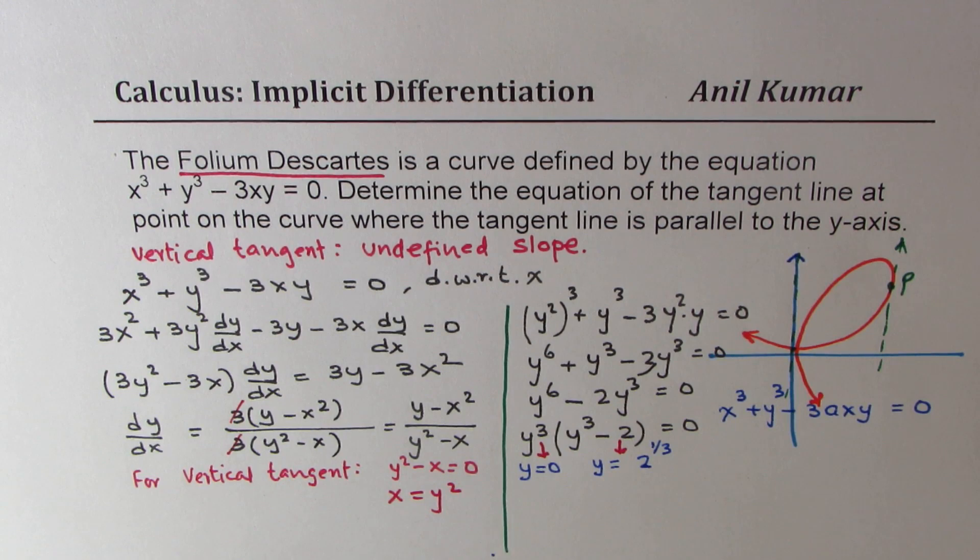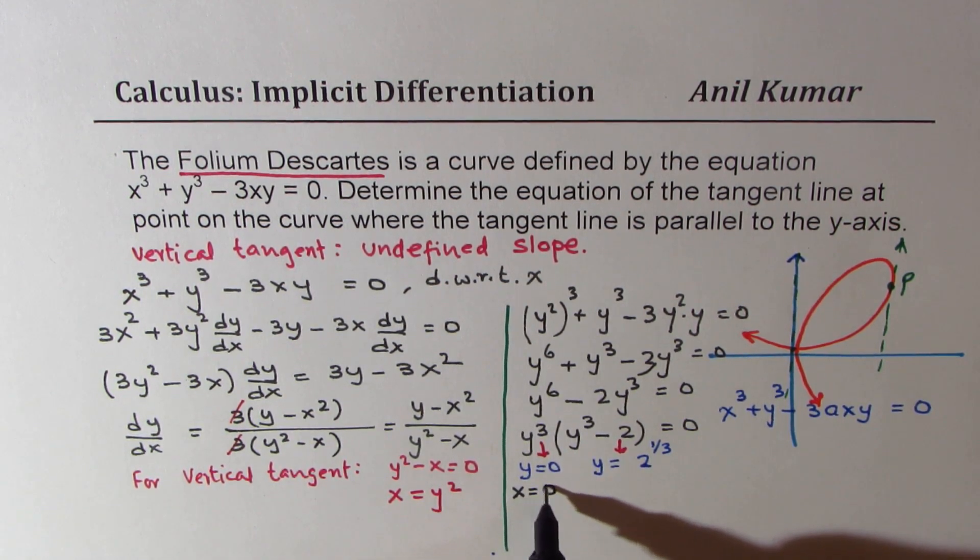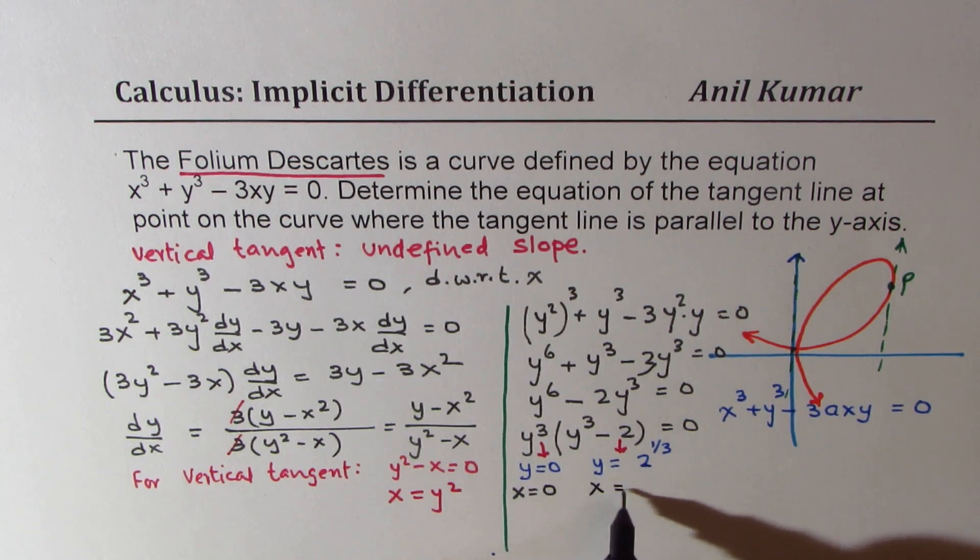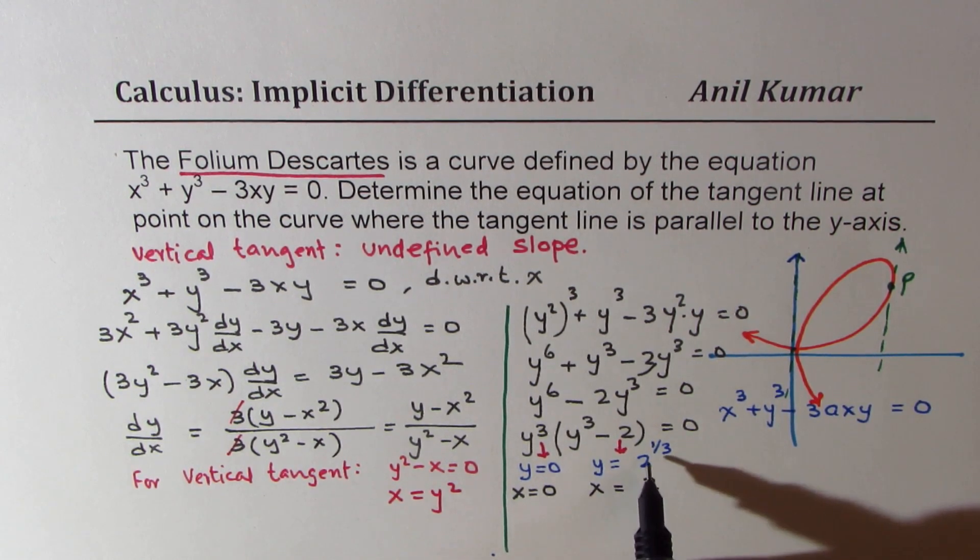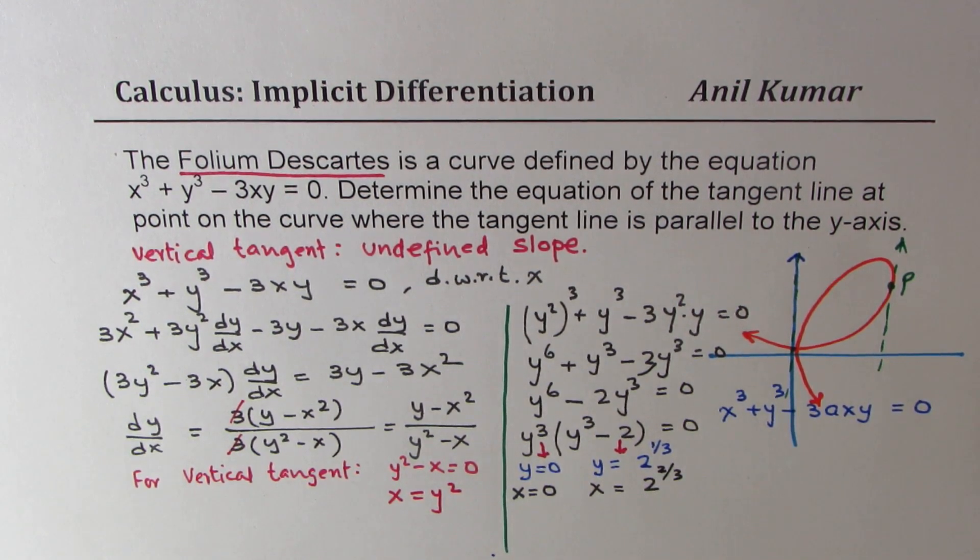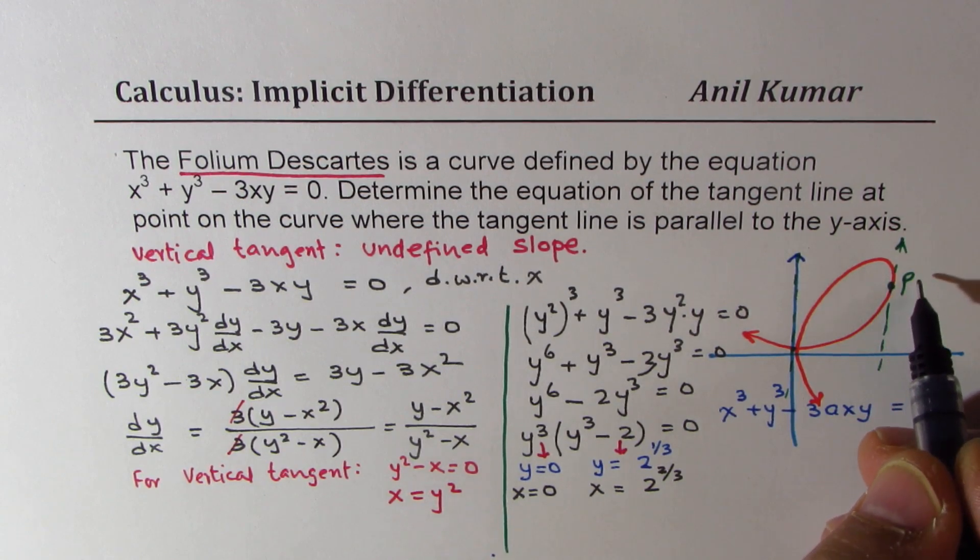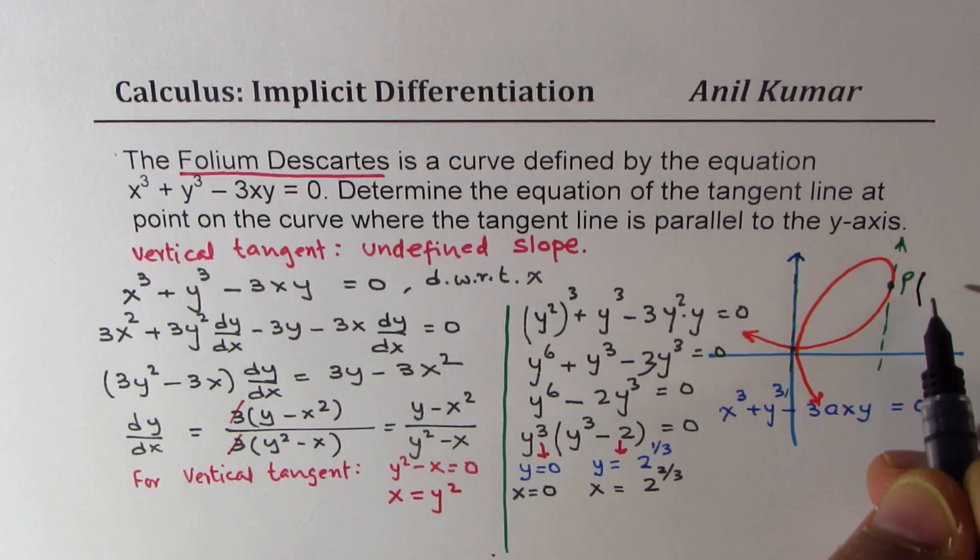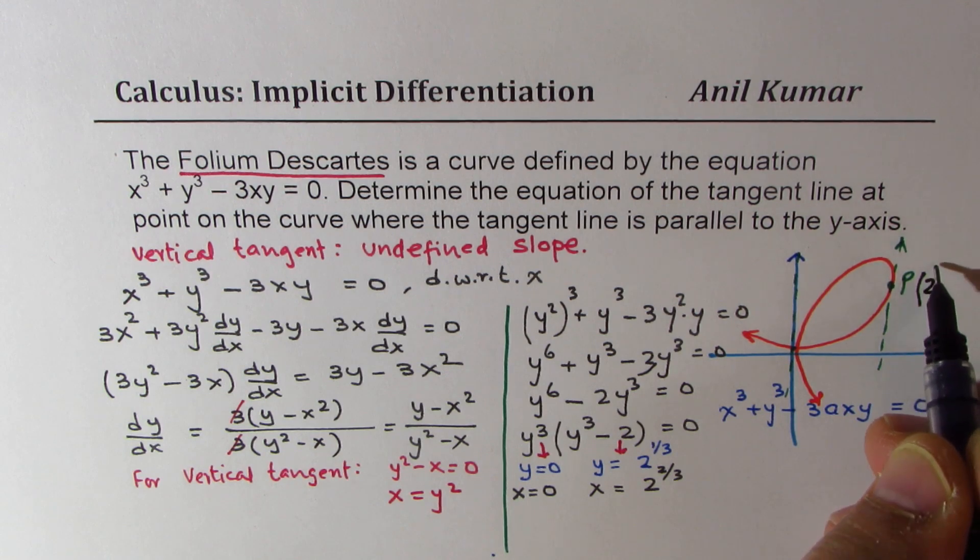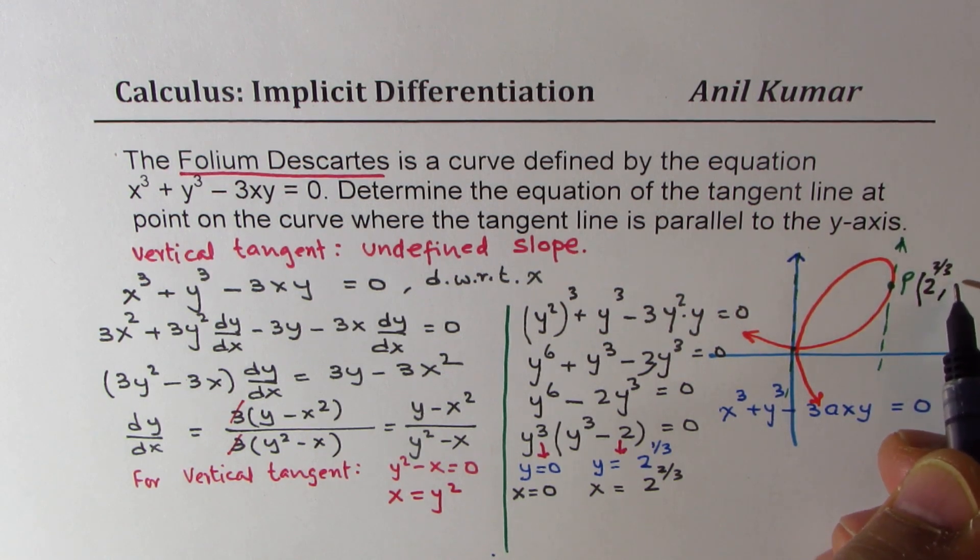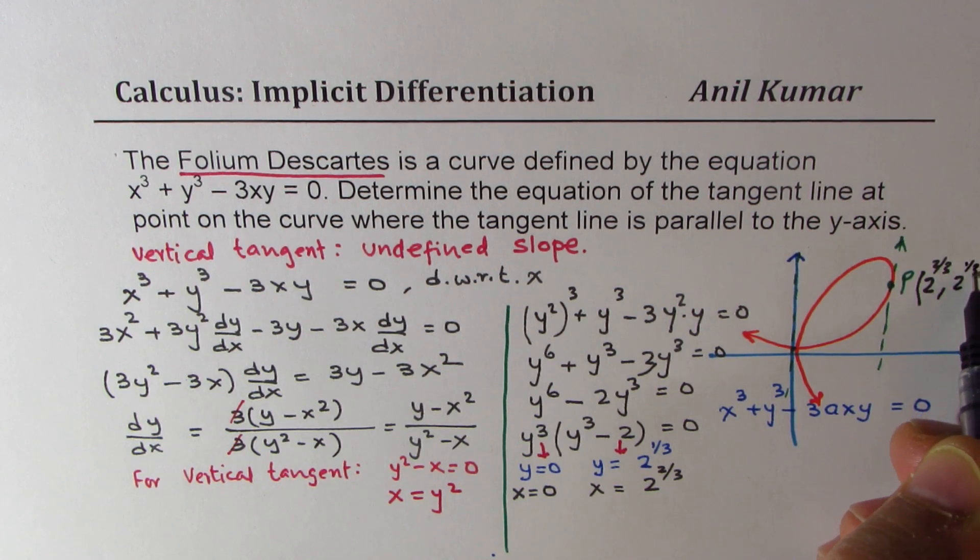Since we know x is y squared, so here x is equal to 0, and in this case, x is equal to square of this, so it is 2 to the power 2 over 3. So we get our points, so the points are, so this point will basically be cube root of 2 squared, 2 to the power 2 over 3, and y value is 2 to the power 1 over 3.